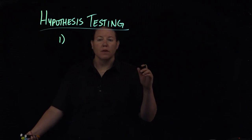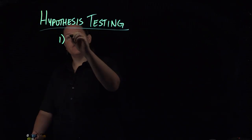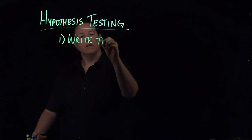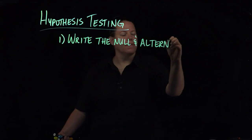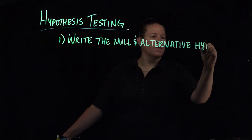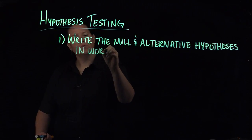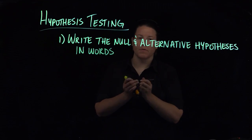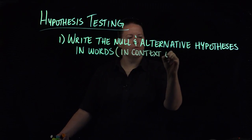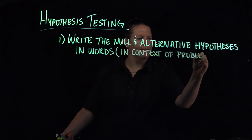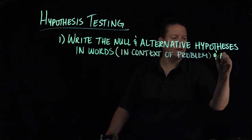When we talk about hypothesis testing, we're talking about the two hypotheses that exist: the null and the alternative. The first thing we do is write the null and alternative hypotheses in words — and these words need to very much be in the context of the problem that's asked — and also in mathematical notation.